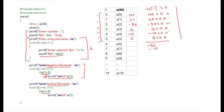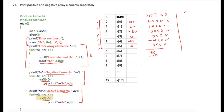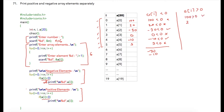In the next for loop we check positive elements. The condition is a[i] > 0. In the first iteration, 100 > 0 is true. In the next iteration, 20 > 0 is true. Then -30 > 0 is false. Similarly, 0 > 0 is false, and -10 > 0 is also false.